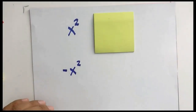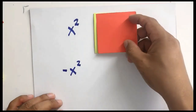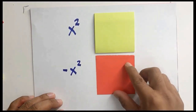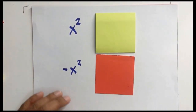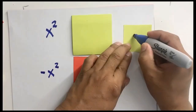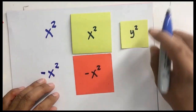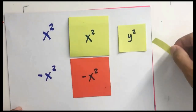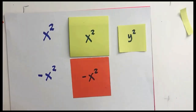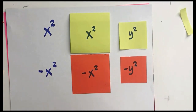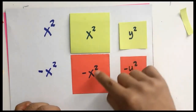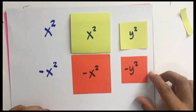We use the same dimension but use the color red to represent negative. We can also have y squared — a square with a side of y. And negative y squared is the same square as y squared, only in red to represent negative. All of these have integer exponents and are considered polynomials.